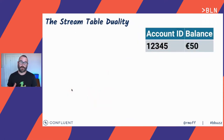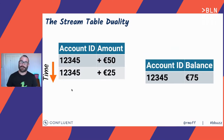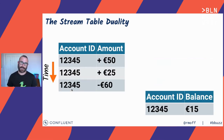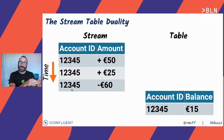Think about a database table that holds account balances — for a given account ID, what is the current balance? The current balance is 50 euros. How did that balance get there? We deposited 50 euros, so the balance is 50 euros. We deposited another 25 euros and the balance changed to 75. Then we spent some money and the balance changed again. What we have here is a stream of events, and you can replay that stream to build the table. At any point in that stream, you have the actual state those events roll up to. The table is our state. You can go from a stream to a table, but you can also go from a table to a stream — every change to that table is an event.